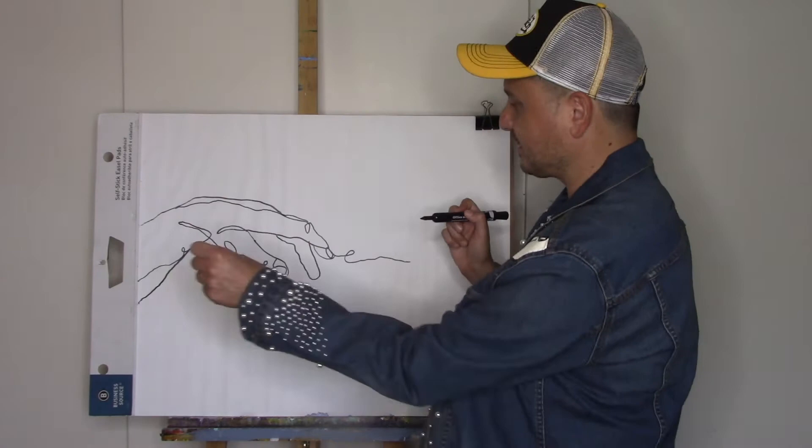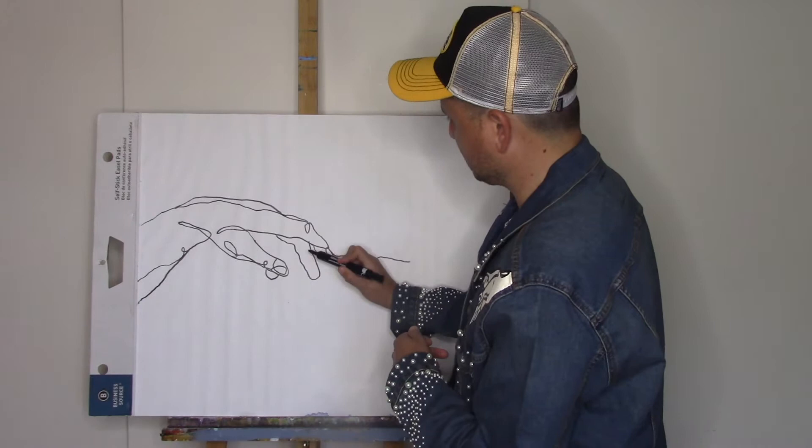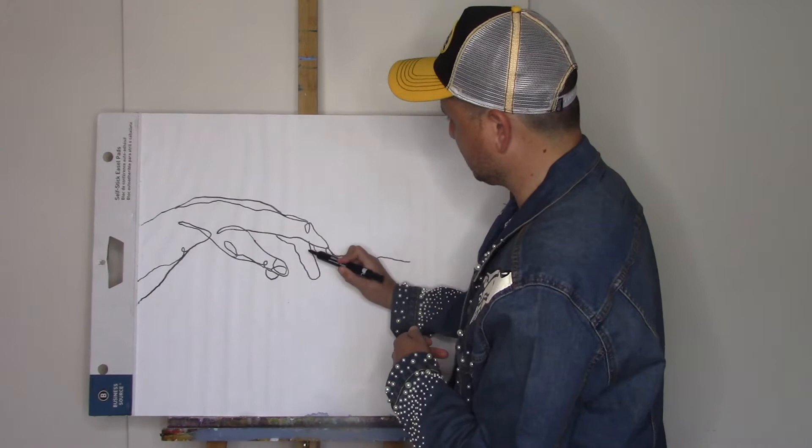Like here I'm having a little bit of issue with how drastic that change is there, so I'm just gonna bring a line to connect all that. And now I like that shape better than what I had. Let's continue with the fingers.